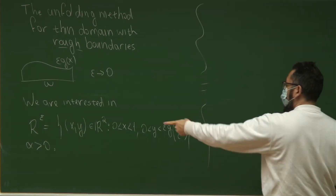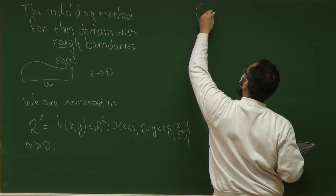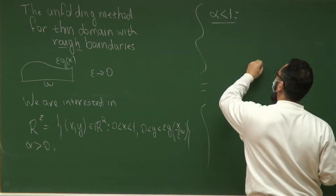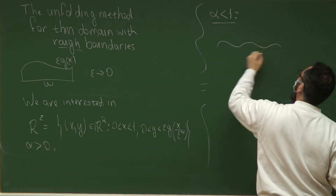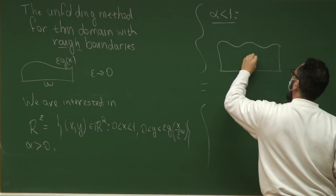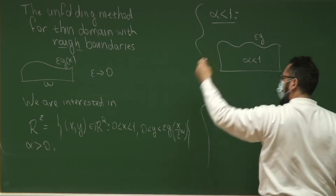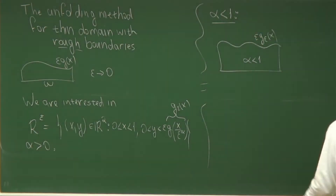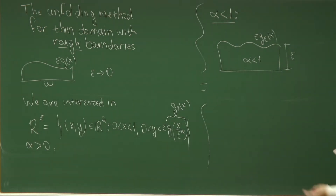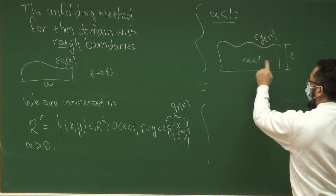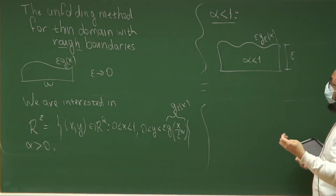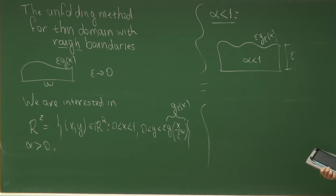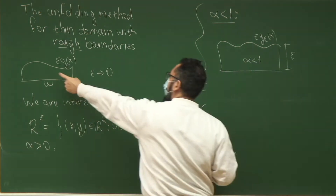According to the parameter alpha we have some different behaviors. First, if alpha is small, the function g_epsilon of x will be of order epsilon. When alpha is smaller than one it oscillates the upper boundary, but it's not wild — not a bad kind of perturbation. So it simplifies a lot of things and it's almost like the standard thin domain case.